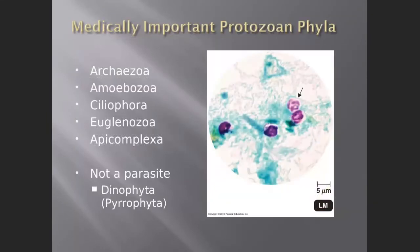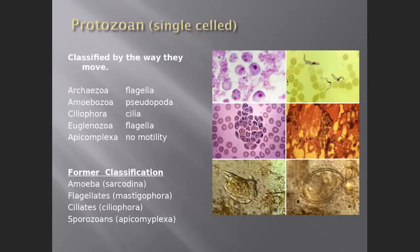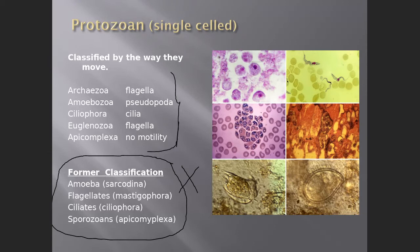The protozoan groups we'll cover are Archaeozoa, Amoebozoa, Ciliophora, Euglenozoa, Apicomplexa, and Dinophyta (sometimes called fire algae or Pyrrophyta). The kingdoms in greatest taxonomic flux right now are Fungi and Protista, due to ongoing research. We'll use the newer classification system.